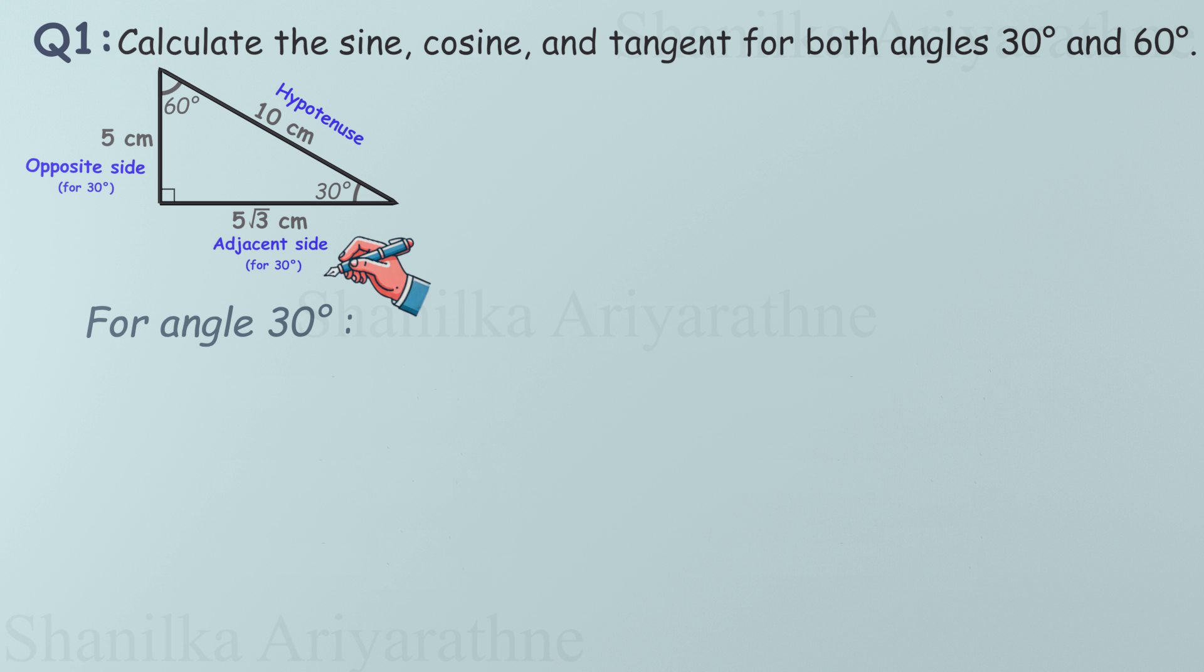Now let's find those trigonometric ratios. Apply the right ratio using our trusty chant SOHCAHTOA. First, sine of 30 degrees: opposite by hypotenuse, 5 over 10, which simplifies to 1/2.